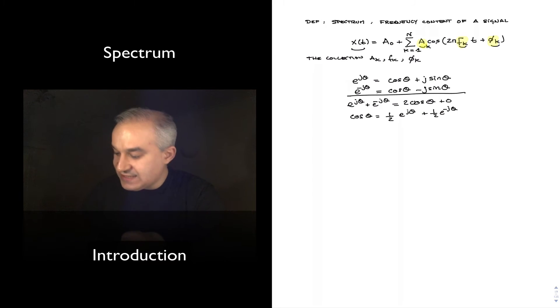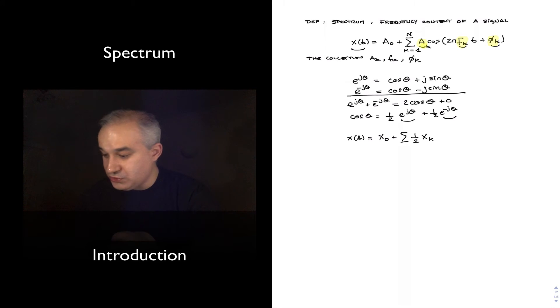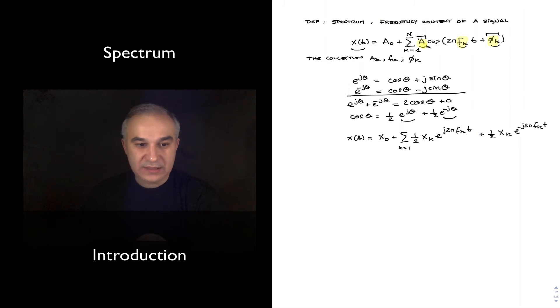We could express this cosine as a sum of two sinusoids, so if we do that, in this case we will have x of t equals, I'm going to change this a's with x zero, plus the sum of one-half x of k and that's a phasor, includes both the amplitude and this phase, it's a complex number, e to the j 2 pi f k t plus one-half x k e to the minus j 2 pi f k t, k equals 1 to n.